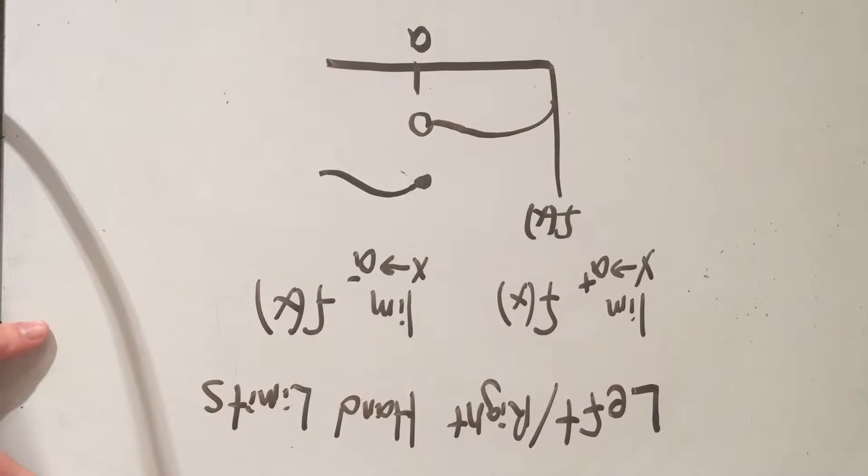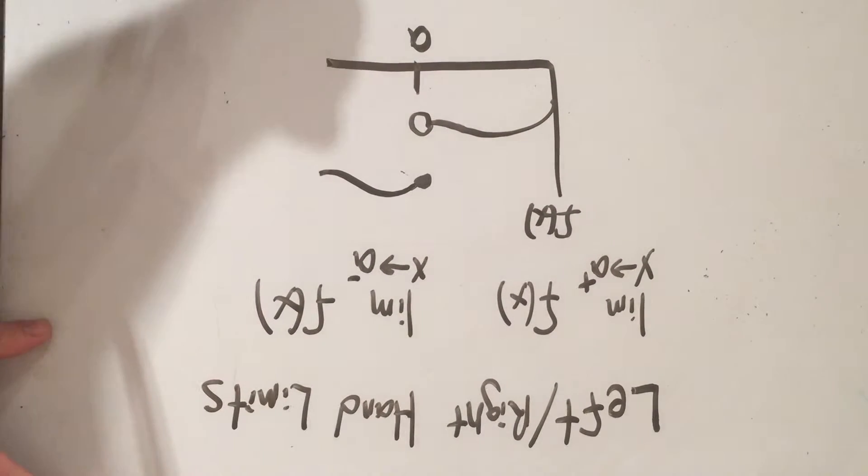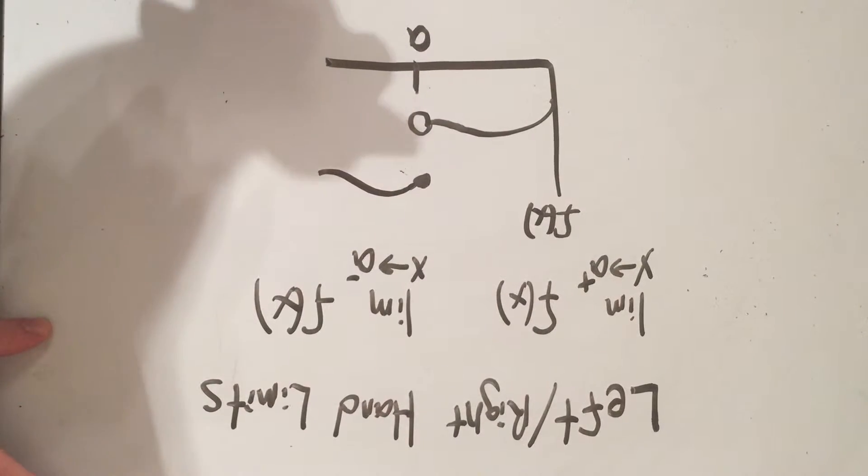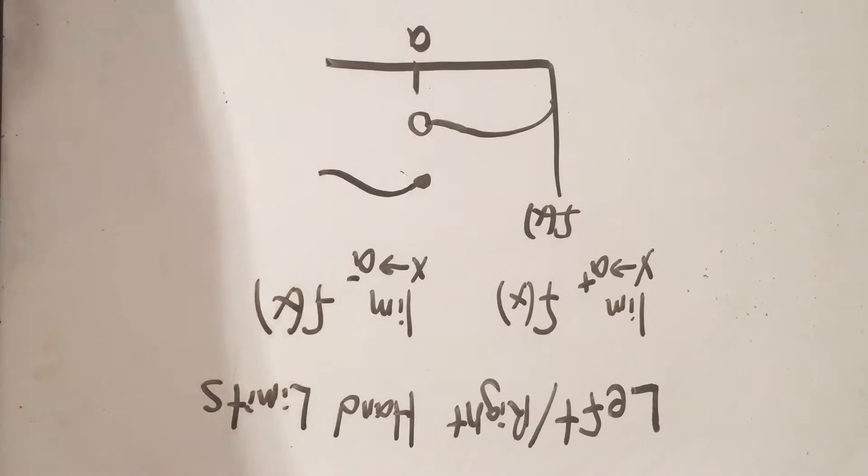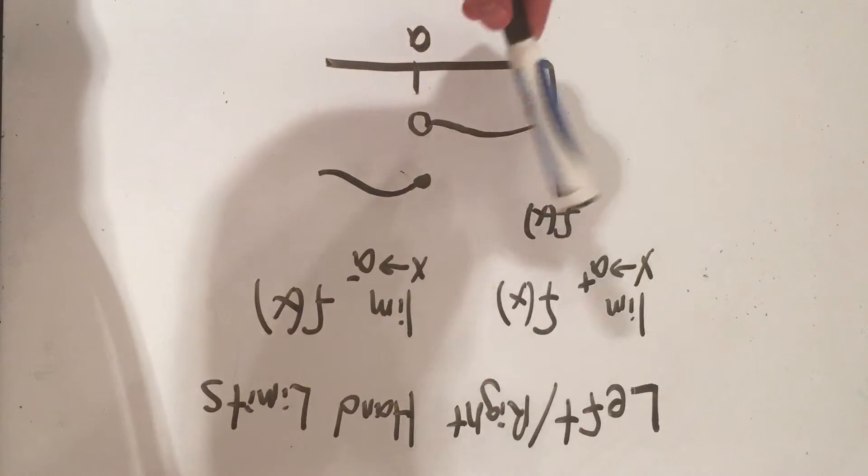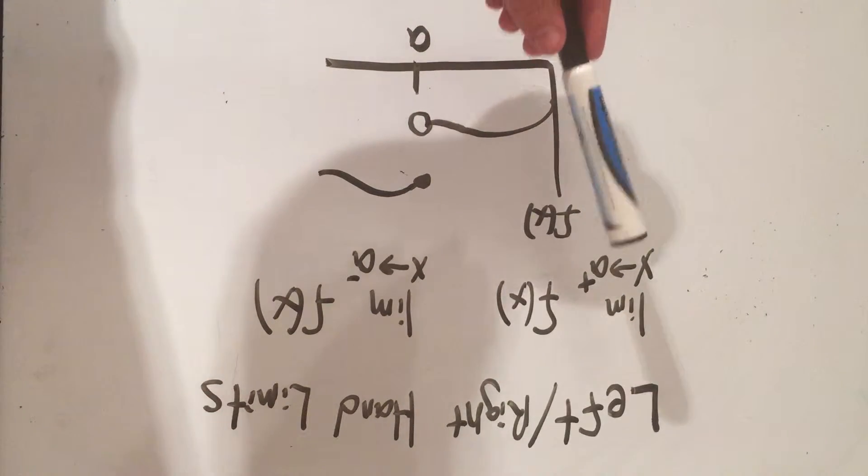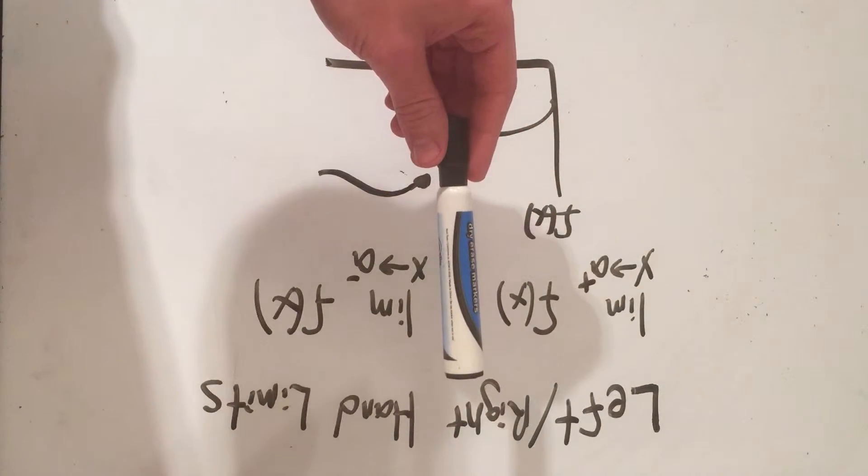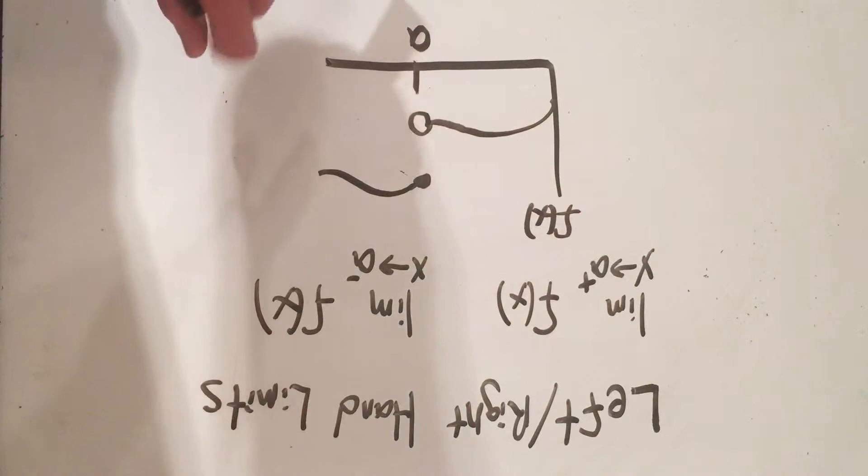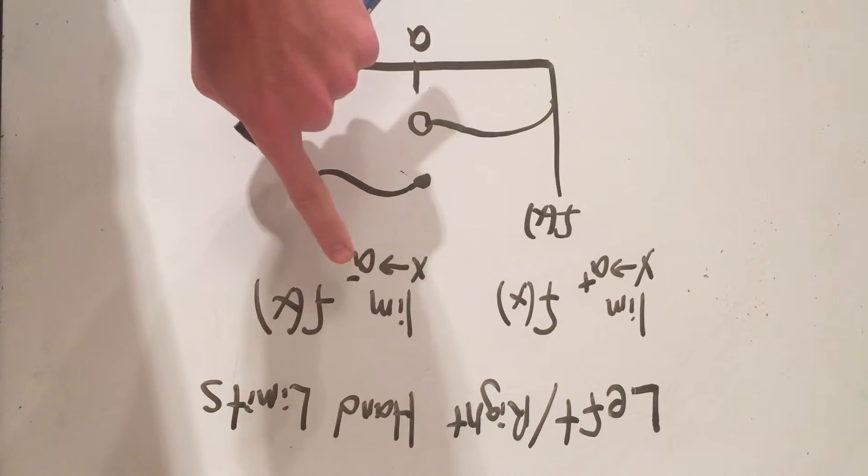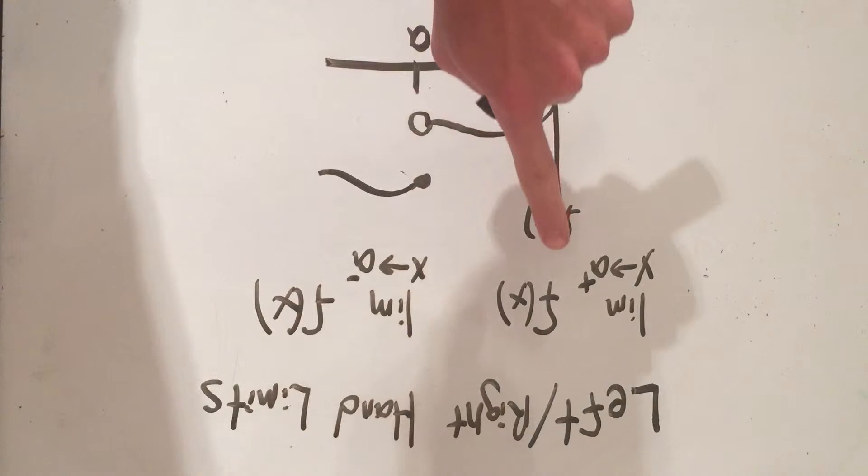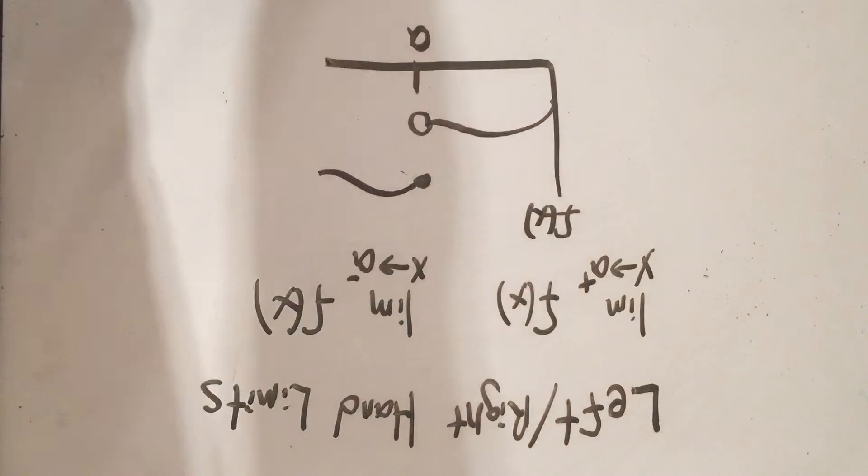I'm going to talk a little bit about left and right-handed limits. We talked before about limits from both sides, but if I wanted to take the limit from just either the left side or the right side, I would denote that with this little minus sign up here. This means the limit as I approach my function from the left, and this little plus sign means I approach the function from the right.